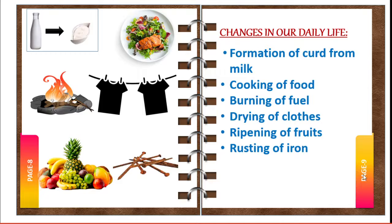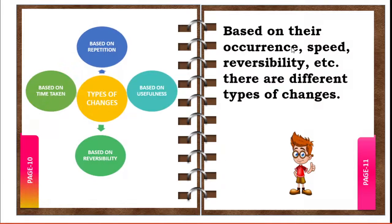Ripening of fruits and rusting of iron are also examples of changes in our daily life. In rusting, iron takes oxygen from the atmosphere and turns into iron oxide. Based on their occurrence, speed, and reversibility, there are different types of changes.